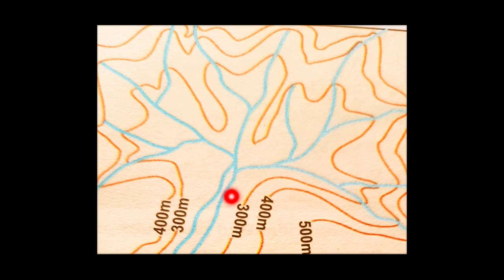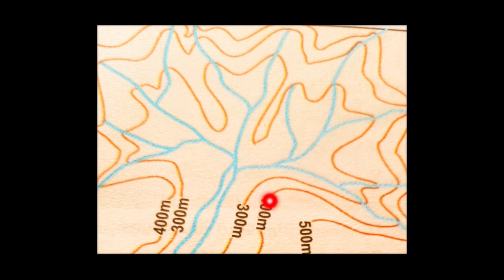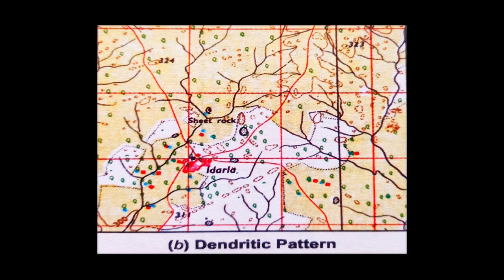You can see the tree-like structure with branches, and the contour lines are also marked alongside the dendritic drainage pattern. In a topographical map, the dendritic pattern spreads all over the area like branches of trees.